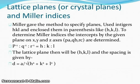Lattice planes, crystal planes, and Miller indices. Miller gave the method to specify planes using integers H, K, L and enclose them in parenthesis. To determine the Miller indices, the intercept by the given plane on X, Y, and Z axis P, A, Q, B, R, C are determined. P inverse, Q inverse, R inverse equals H, K, L. The lattice plane will be H, K, L and spacing is given by D equals A divided by root under H squared plus K squared plus L squared.